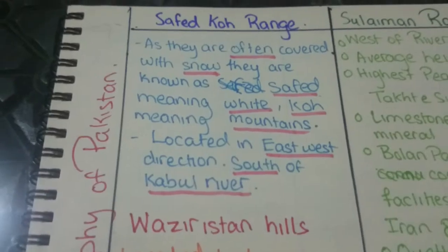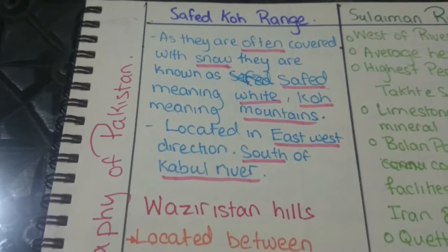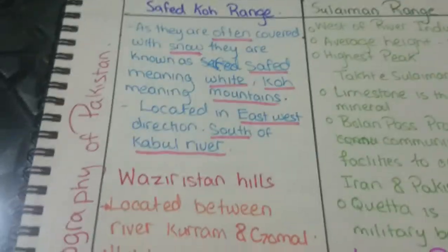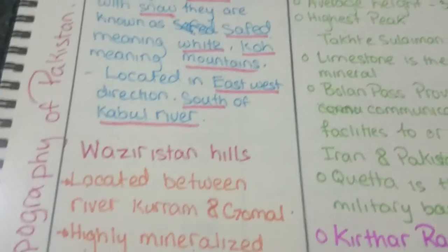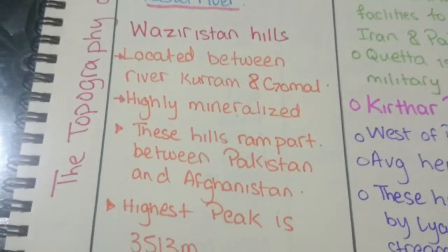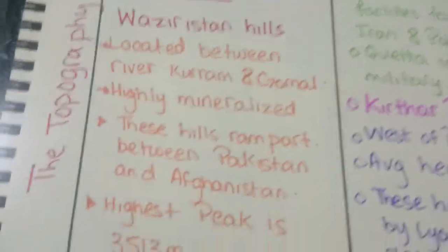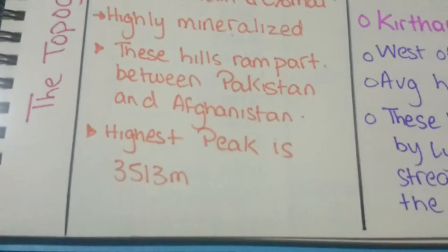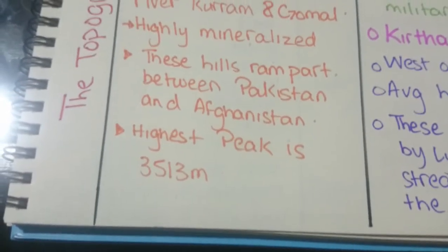Sufaid Koh: as they are often covered with snow, they are known as Sufaid meaning white and Koh meaning mountain — hence Sufaid Koh, the white mountain. They are located in the east-west direction, south of River Kabul. Waziristan Hills are located between River Kuram and Gomal. They are highly mineralized. These hills are a rampart between Pakistan and Afghanistan. The highest peak here is 3,513 meters.